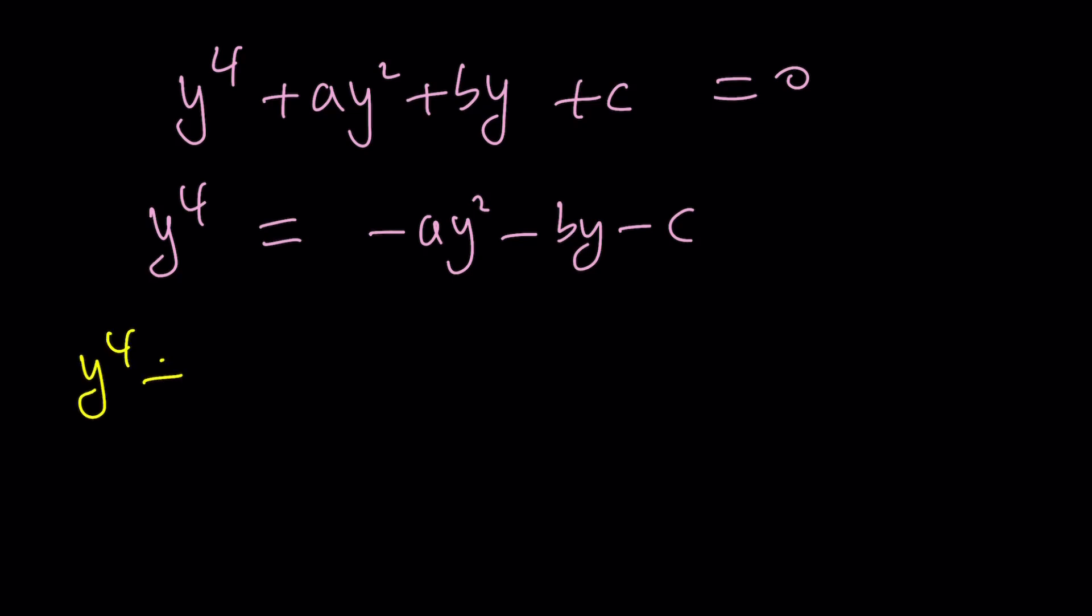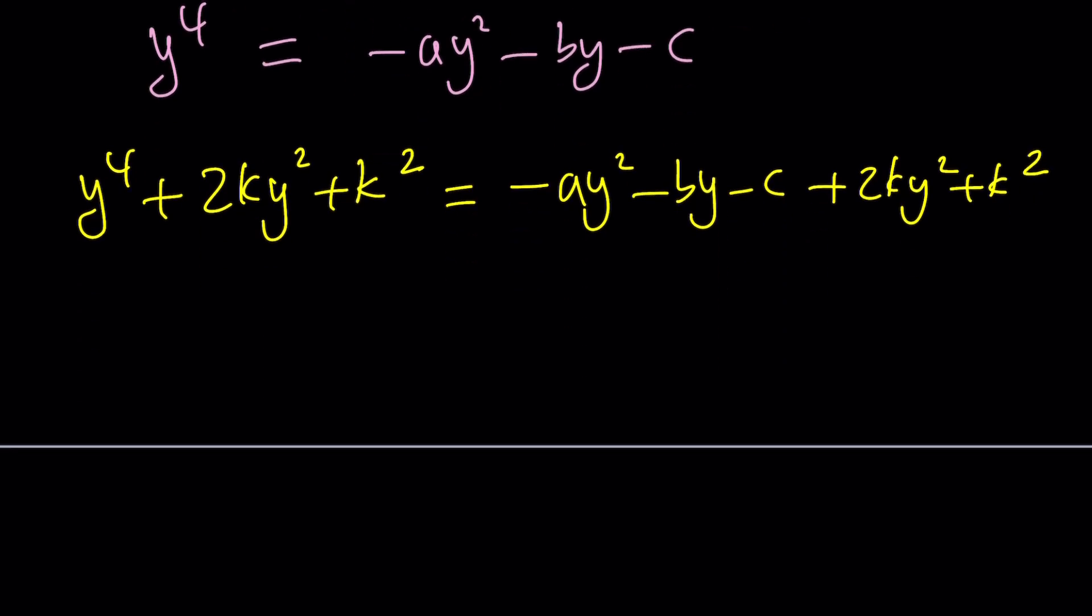So, here's how it goes. You just add 2ky squared plus k squared, and that basically makes the left-hand side a perfect square. And you do the exact same thing on the right-hand side. Add 2ky squared plus k squared. Now, k is a constant to be determined, and that's actually going to come from here.